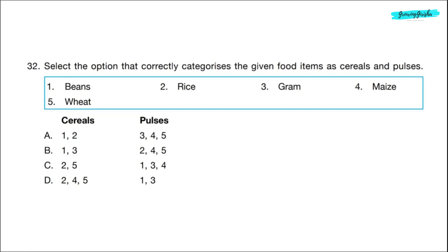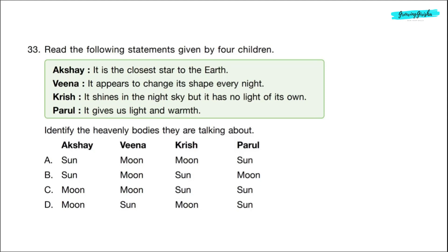Question 32. Select the option that correctly categorizes the given food items as cereals and pulses. Rice, maize and wheat are cereals. Beans and gram are pulses. Correct answer is option D. Question 33. Read the following statements given by four children. Akshay, it is the closest star to the earth. Veena, it appears to change its shape every night. Krish, it shines in the night sky but it has no light of its own. Parul, it gives us light and warmth. Identify the heavenly bodies they are talking about. Correct answer is option A. Akshay is talking about sun. Veena is talking about moon. Krish is talking about moon and Parul is talking about sun.